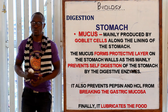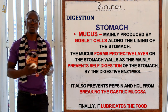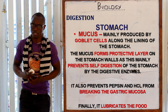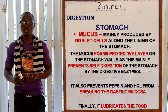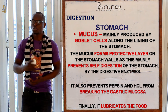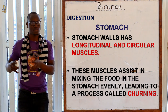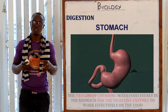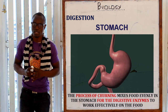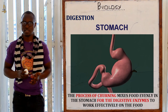Mucus, produced by the goblet cells, forms a protective layer on the stomach walls, preventing hydrochloric acid and pepsin from breaking down the gastric mucosa and digesting the stomach walls. Mucus also lubricates food, just as it does in the mouth. The stomach has longitudinal and circular muscles that mix the food in a process called churning, visible as wave-like actions on the stomach walls. The fluid resulting from churning is called chyme — food mixed with digestive enzymes.